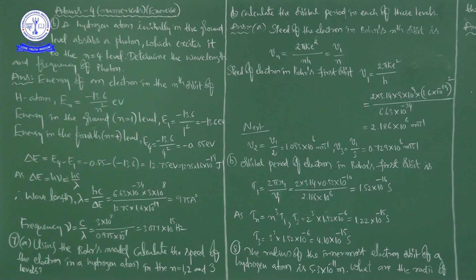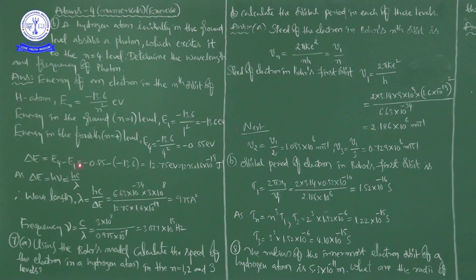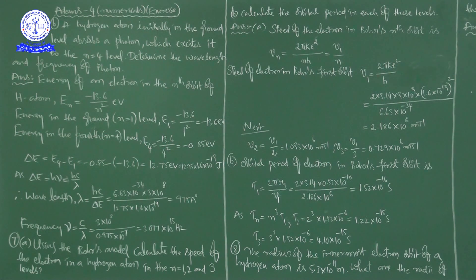The question says hydrogen atom is initially in the ground level and absorbs a photon which excites it to the N equal to 4 level. So it is going from ground level to the 4th level. When it is in the ground level, use the formula: E1 equals minus 13.6 divided by 1 squared, which equals minus 13.6 electron volts.